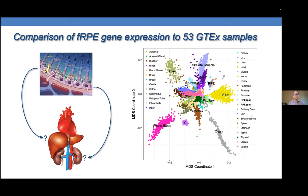I was actually asking more generally — whether retinitis pigmentosa in general might also be modified by Tyro3, not just MERTK-associated RP. Do you know of any tests of Tyro3 modifying other RP models?